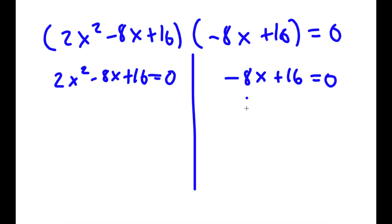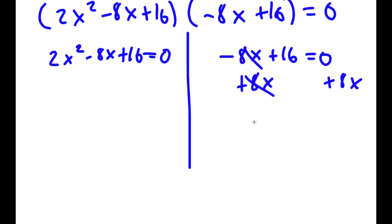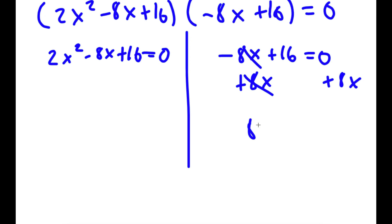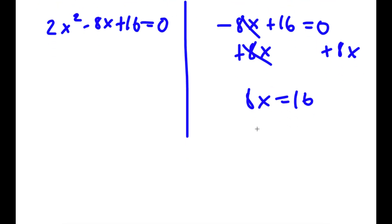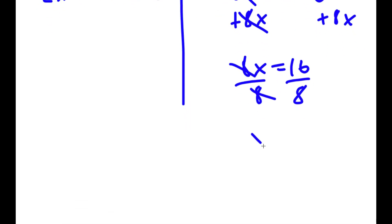For negative 8x plus 16 equals 0, I add 8x to both sides — these cancel — so I get 8x equals 16. Dividing both sides by 8, I get x is equal to 2.